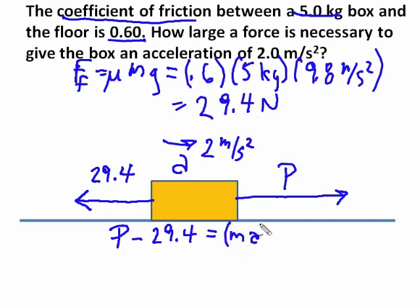We have both m and a. m is 5, a is 2. 5 times 2 is 10, so it's 10 newtons.